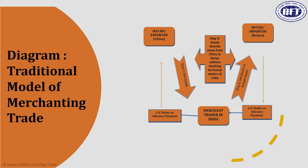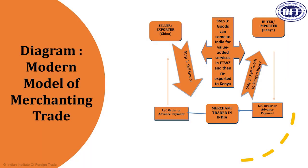The only condition is that the basic structure of the goods must not change — the HS code must remain the same. If it is cardamom, the HS code remains cardamom. Basic packing, cleaning, grading, sorting, bundling, and inspection are allowed — activities that make your product more attractive and competitive in international markets. There are two models from the new RBI guidelines: the traditional model (source from China, sell in Kenya directly) and the new model (source from China, bring to FTWZ, do value-added services, then sell in Kenya).